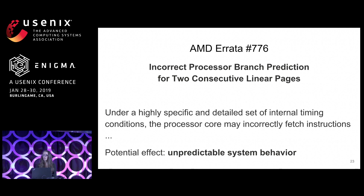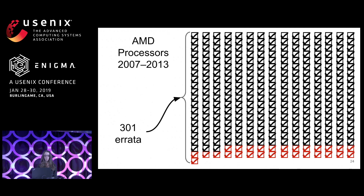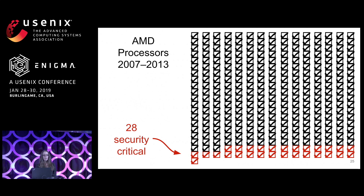So we looked at seven years' worth of published errata lists covering 60 different AMD processors, looking to identify bugs that might provide a foothold for attacks from unprivileged software. Our categorization was necessarily subjective, but we tried to be conservative and systematic. We asked whether the bug would likely have an effect on privileged state — for example, the processor's current privilege level, page tables, or hardware virtualization registers — or an effect on special events like taking an exception. In all, we analyzed 301 unique entries and found that 28 fit our definition of security critical — just over 9%. Every processor we looked at was affected by at least one security-critical bug, and most had no fix listed.